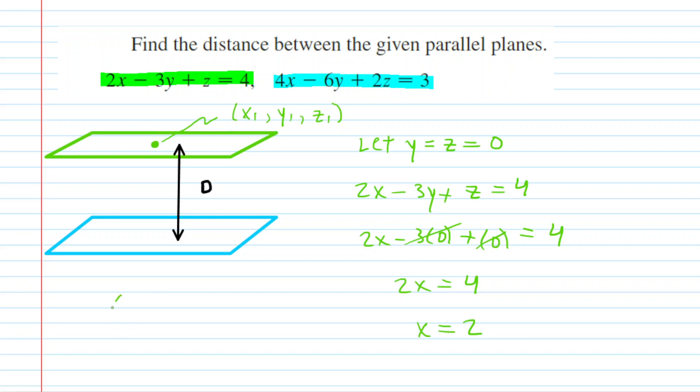So, for that point, the x1 is going to equal 2, the y1 was 0, and then the z1 was also 0. We're going to save those values for later when we use the equation to get this distance.